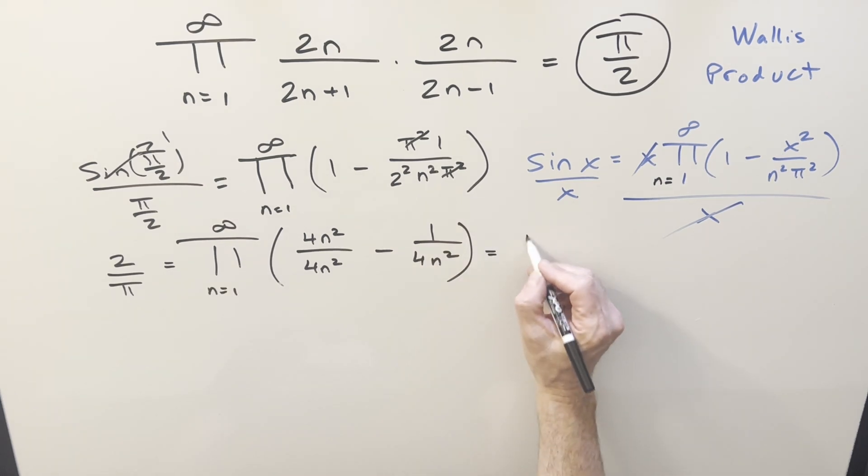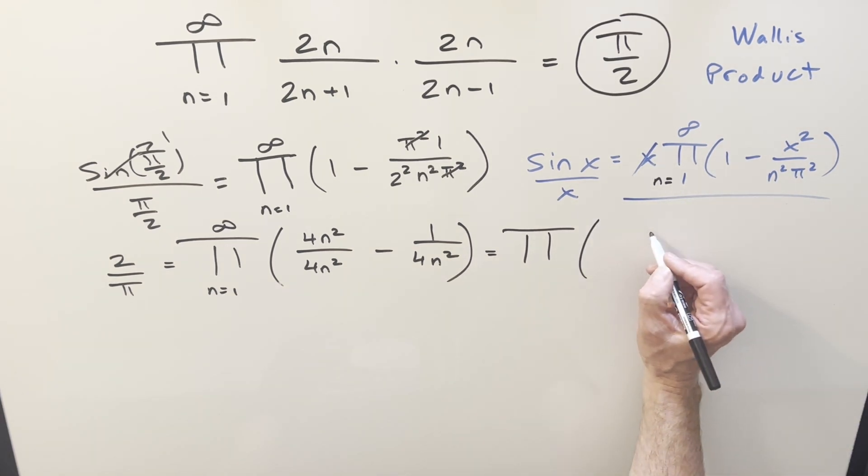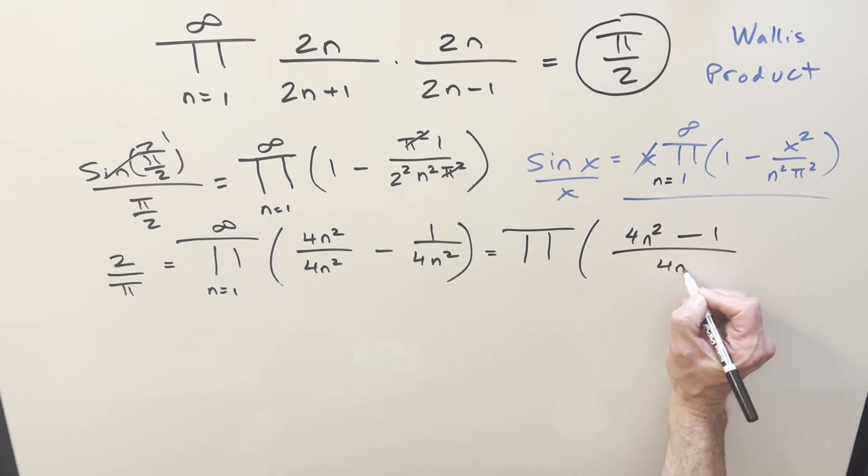But then I can bring this together with the common denominator. So what's going to happen is, let me get rid of this. I can write this now as 4 n squared minus 1 all over 4 n squared.